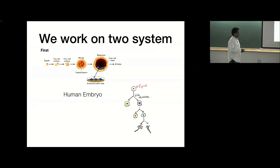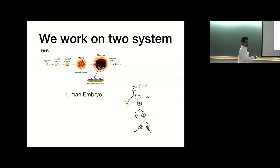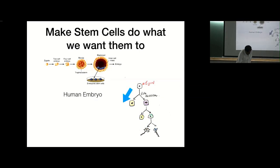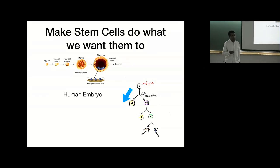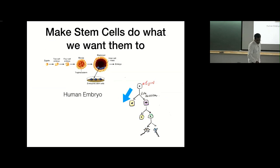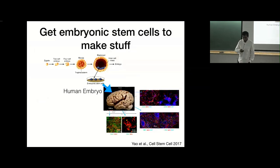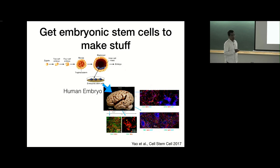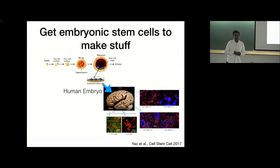We've primarily been interested in nervous system development. One of the questions we want to ask is: can we make these cells do what we want them to? Build tissue like we want? Can we control them? I'll rush through the biology results somewhat, just to give you a feel for the kinds of experiments we can do, and then go through some of the really difficult challenges we face in terms of statistical inference and where we need help.